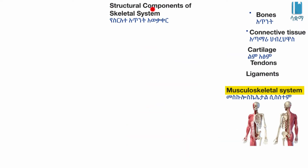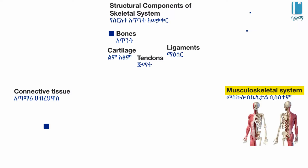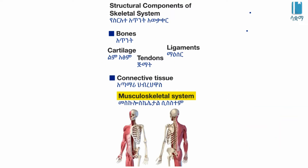Structural components of the skeletal system. The bone is the most important part. The cartilage, the ligament, and the connective tissues are the major structural components of the skeletal system.